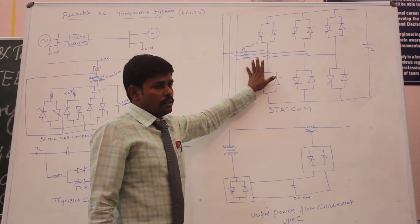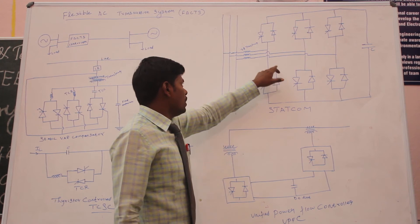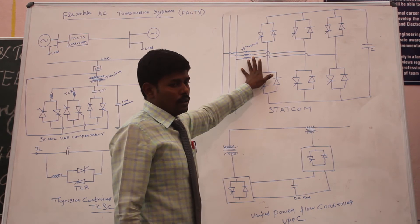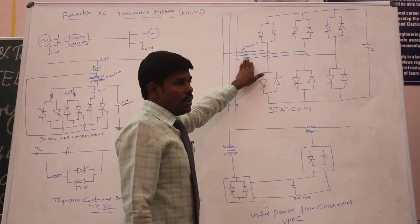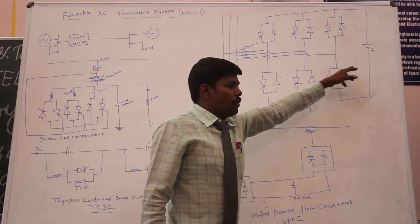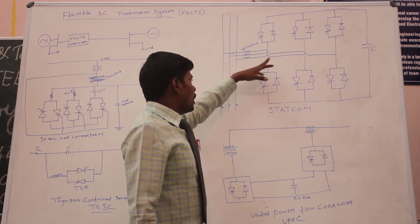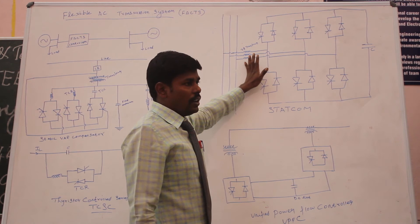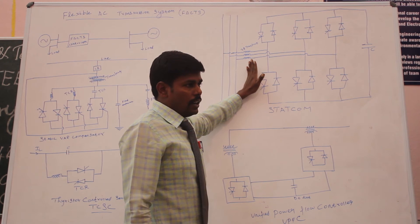This STATCOM uses three-phase lines, and each and every end has power dynamic devices and controllers, including a microcontroller. Whenever there is a transient state, the capacitor — which was previously charged — will be discharged. With the help of the thyristor controlled rectifier, it discharges into the line, and this transient power is regulated to a steady state constant.